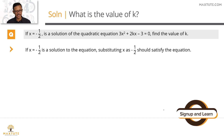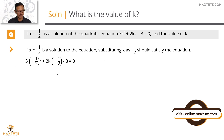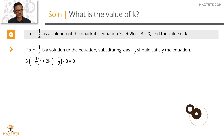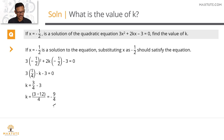To summarize: substituting x = −1/2 into 3x² + 2kx − 3 = 0, we get 3(−1/2)² + 2k(−1/2) − 3 = 0, and solving for k gives k = −9/4.